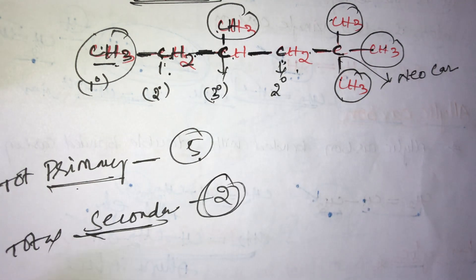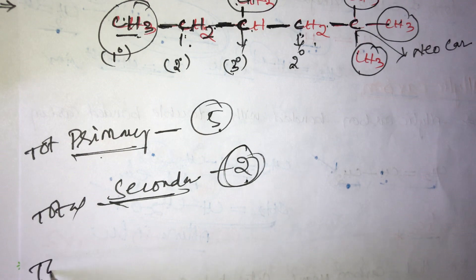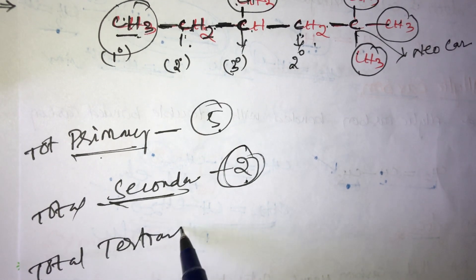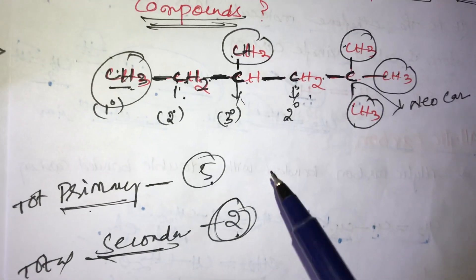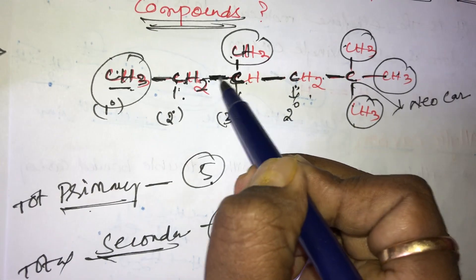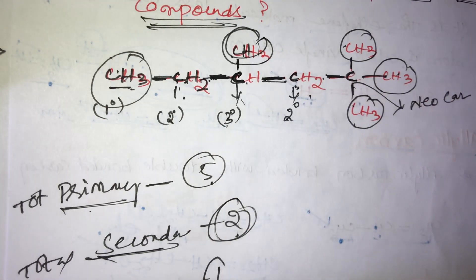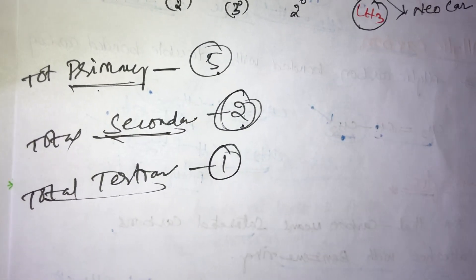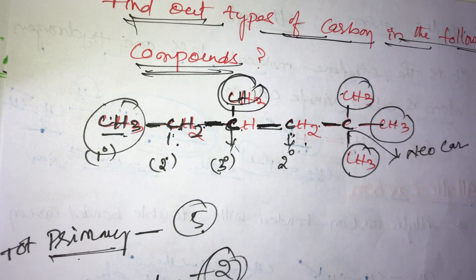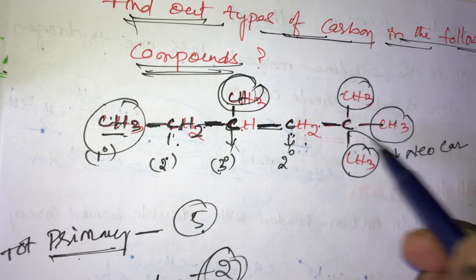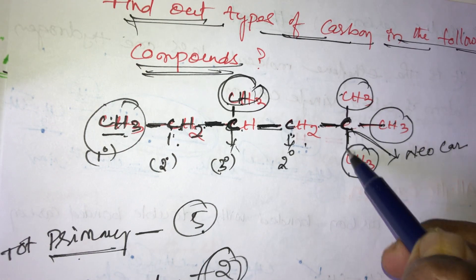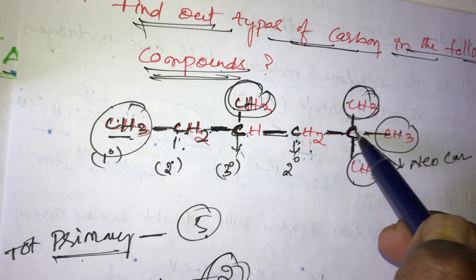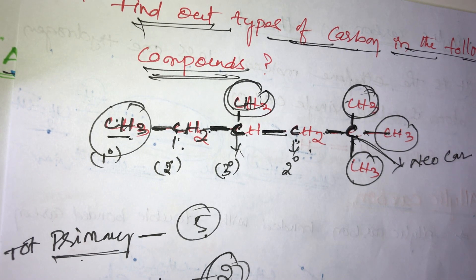Total secondary carbons are two. Total tertiary carbons: in this compound, only one tertiary carbon is there. This carbon is bonded with left, right, and upper side — so only one tertiary carbon. For neo carbons, only one neo carbon is there — bonded with left, right, lower, and upper side carbons.